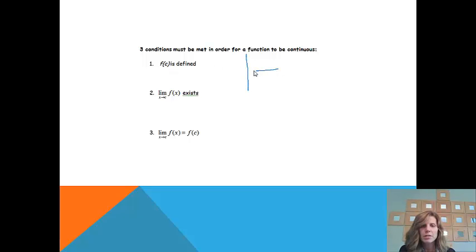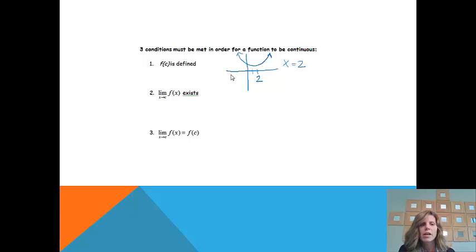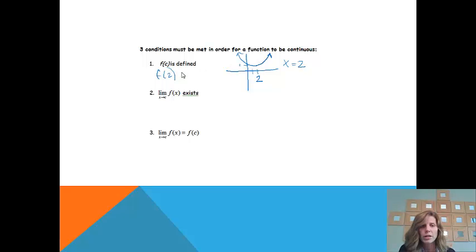Looking at a graph where my c value is 2, I want to decide: is the function continuous at x equals 2? The first check is that f of 2 must be defined — meaning, is there a y value at x equals 2? Looking at x equals 2 on this graph, there is a y value of 1, so f of 2 equals 1. It's defined.